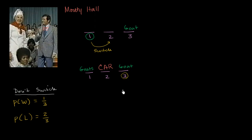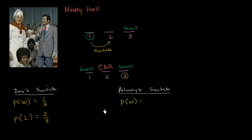Now let's think about the switching situation — what is your probability of winning if you always switch? Think about how you would win if you always switch: if you pick wrong the first time, they're going to show you the other wrong door, so you should always switch. If you picked wrong door number one, they show you door number three — switch. If you picked wrong door number three, they show you door number one — switch. So if you picked wrong and switch, you will always win.